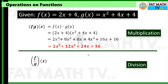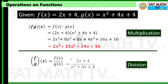We can also have the quotient of functions. f over g of x is defined to be f of x over g of x, provided that g of x is not the zero function. So f of x is 2x plus 4 over x squared plus 4x plus 4 — that would be your final answer if you can't cancel any common factor from the numerator and denominator.